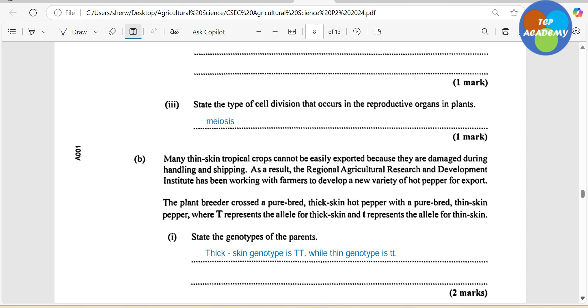The plant breeders cross a purebred thick skin hot pepper with a purebred thin skin. So what we're saying here is that they are homozygous. We have homozygous dominant and homozygous recessive. The dominant here is going to be the thick skin. Because what it says here, T represents the allele for thick skin. So capital T is the allele for thick skin. And small t is the allele which represents thin skin. Our task, state the genotype of the parents. The genotype of the parent, we have realized that the thick skin parent is homozygous dominant. So that's going to be capital T, capital T for the genotype. For the other parent that has homozygous recessive, and little t represents the recessive trait, that's going to be small t, small t. So there we have the genotype for both parents.